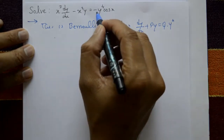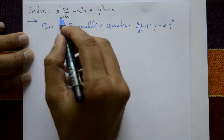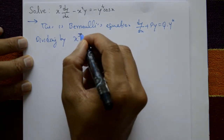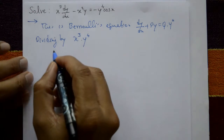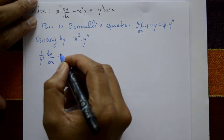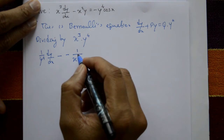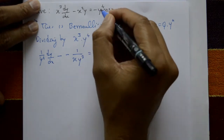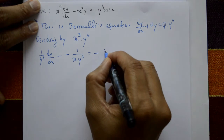Dividing the whole equation by y to the power n, which is y⁴, and also dividing by x³ to eliminate x³. We get (1/y⁴)(dy/dx) minus (1/x)(1/y³) equals minus cos x divided by x³.